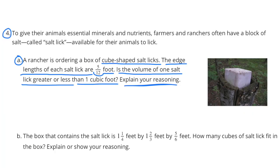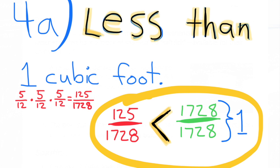Number four: Farmers often have a block of salt called a salt lick for animals to lick. Part a: A rancher is ordering cube-shaped salt licks with edge lengths of five-twelfths of a foot. Is the volume greater or less than one cubic foot? Less than one cubic foot, because five-twelfths times five-twelfths times five-twelfths equals 125 over 1,728, which is less than one.